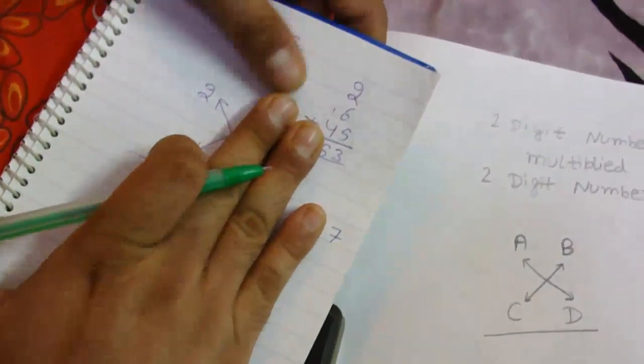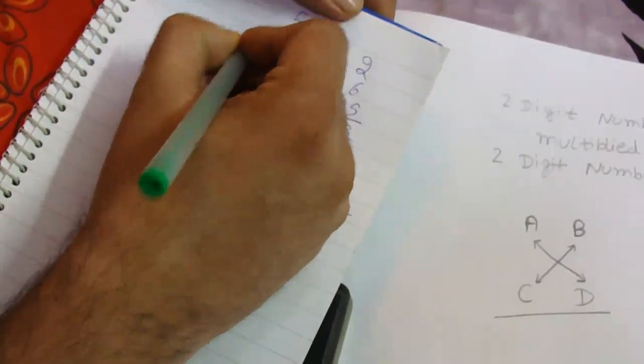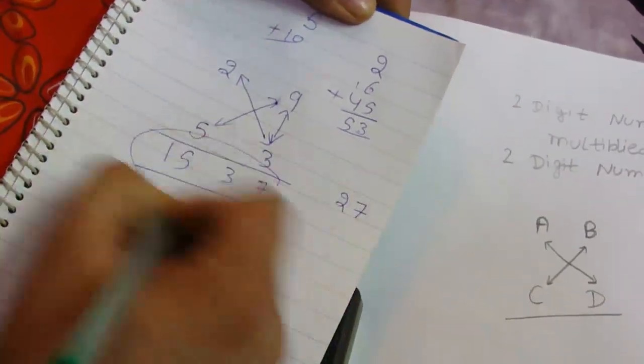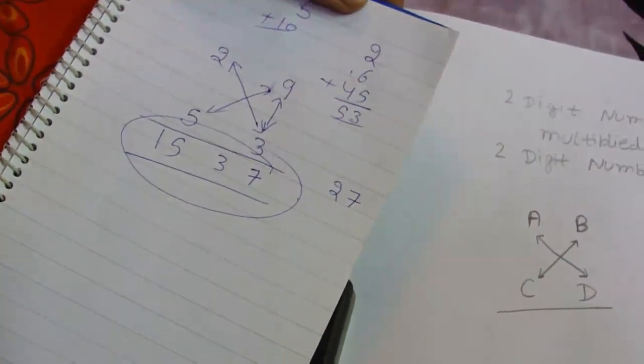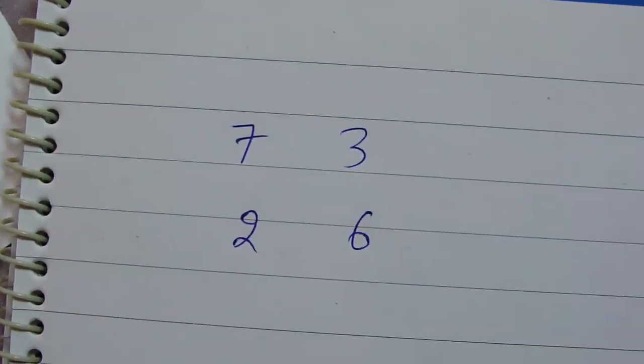The last rule: 5 times 2 equals 10, plus 5 equals 15. So the answer is 1537. So friends, I have done this. It's very easy, everybody can do that. Now we are taking another example of multiplying two digits.